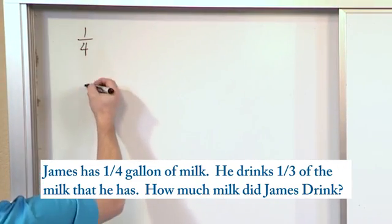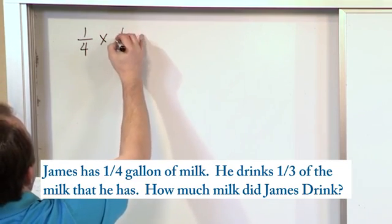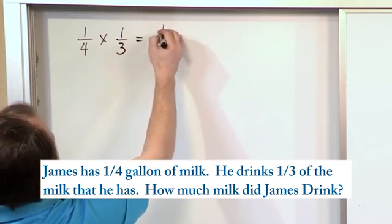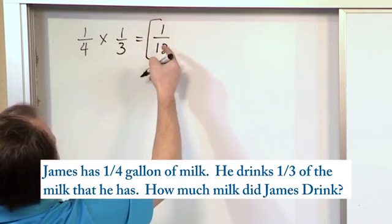What we're going to have is 1/4, which is how much milk he has on hand, and then we multiply by 1/3. So we're chopping it into thirds. All we do is multiply the tops, multiply the bottoms. Four times three is twelve. This is already simplified.